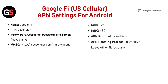Google Fi US Cellular APN settings for Android: Name — Google Fi, APN — US Cellular. Proxy, port, username, password, and server leave blank. MMSC — HTTP m.uscellular.com/MMS/webenc. MCC — 311, MNC — 480. APN Protocol — IPv4 or IPv6. APN Roaming Protocol — IPv4 or IPv6. Leave other fields blank.